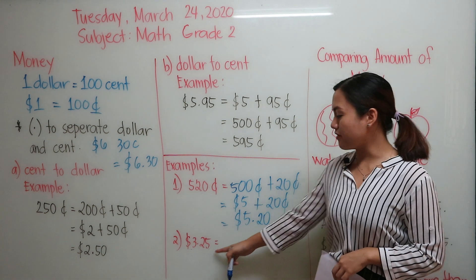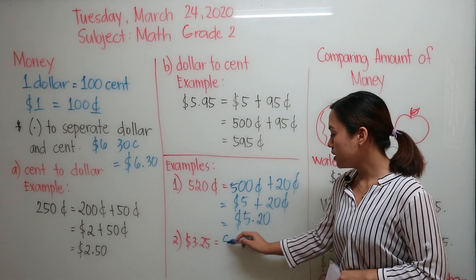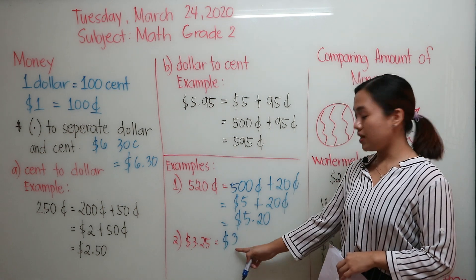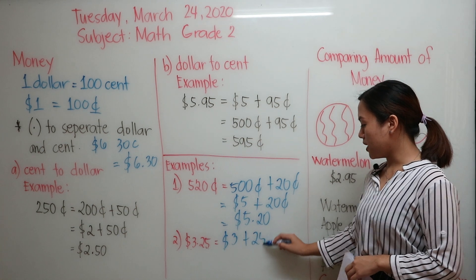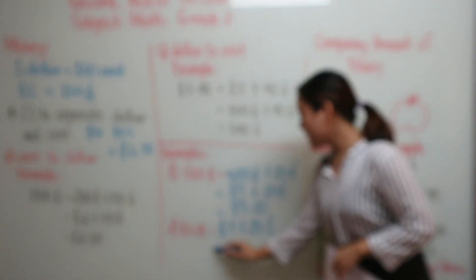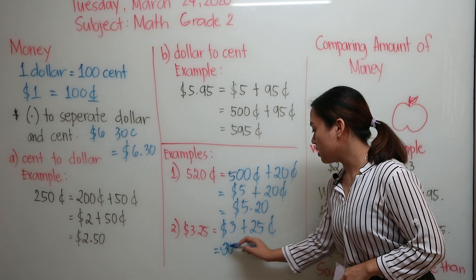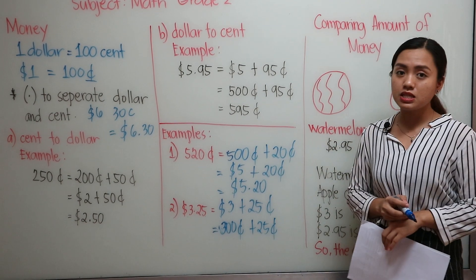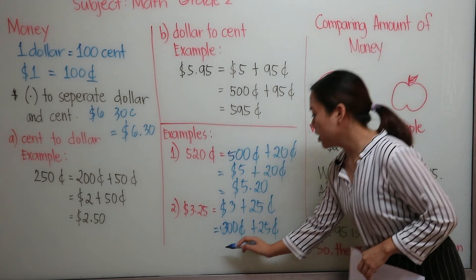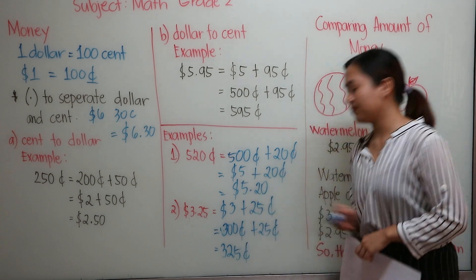Next one, we also have $3.25. So we are going to convert it to cents. We separate the dollar, which is $3, and then we have the cents, which is 25 cents. So $3 is 300 cents. And then just copy 25 cents. Add them together, and you will have 325 cents.